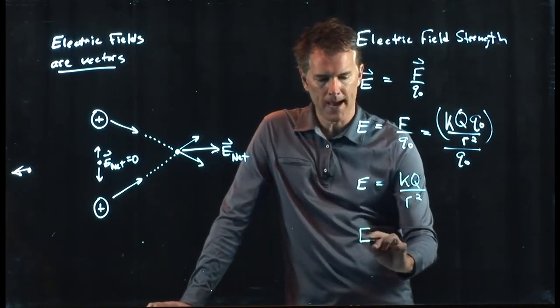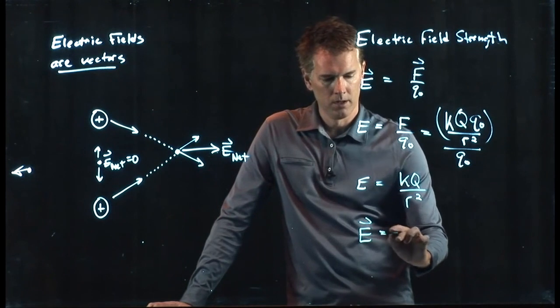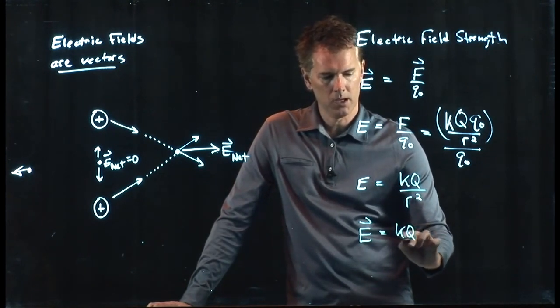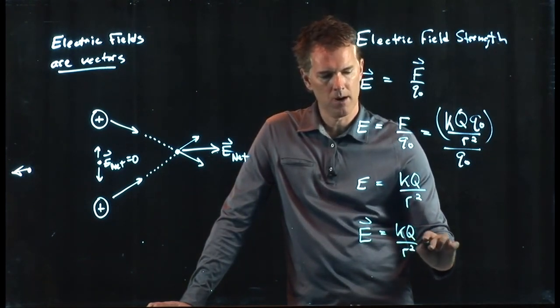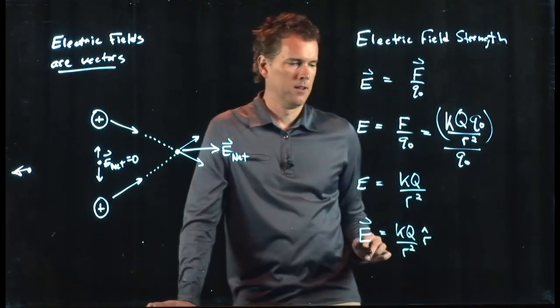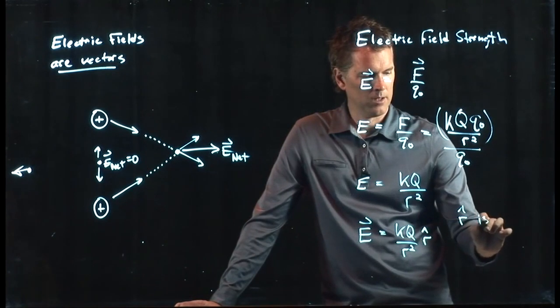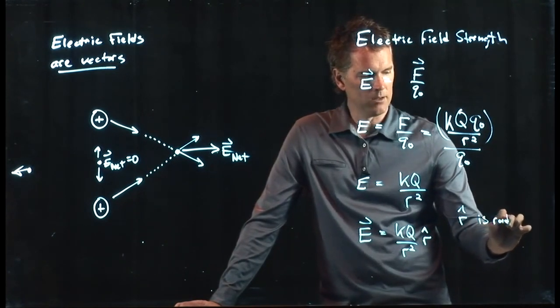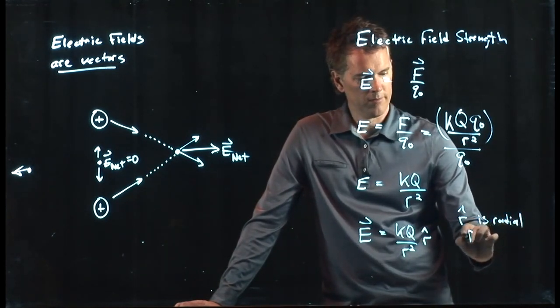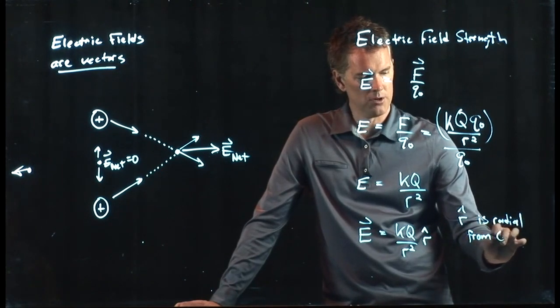And if you want to write it back as a vector, you can say this: This is KQ over R squared, R hat, and R hat is the direction and it's radial from the charge Q.